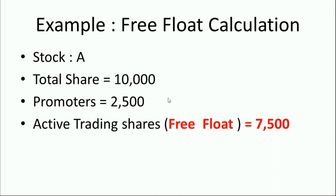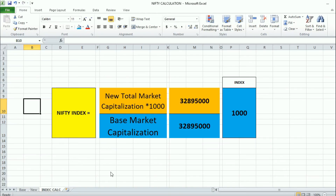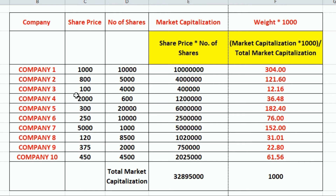Now we will see how to calculate the Nifty with all the formulas. I have created an Excel sheet with Company 1, Company 2, and so on — these are the assumptions to calculate the Nifty and the base market capitalization. For Company 1, the share price is 1000 rupees and the number of shares is 10,000, so the market capitalization is 10,000 × 1000. At the end, the total market capitalization is the summation of all 10 companies — in actual Nifty it is the summation of all 50 top companies — and based on that they calculate the weighted average factor.